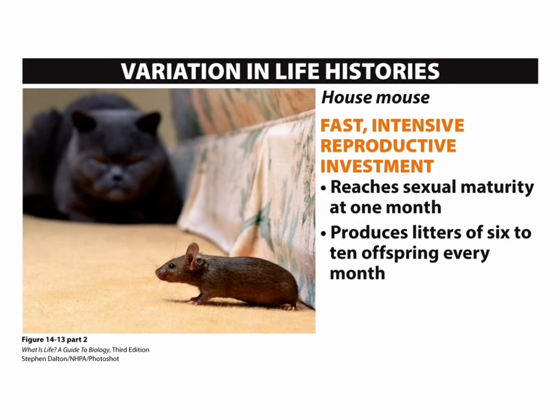The second life history strategy is fast, intensive reproductive investment. These animals reach sexual maturity at a fairly young age and then produce many litters over a short time frame. A good example of this is the house mouse. These animals reach sexual maturity at about one month of age and then reproduce frequently, producing litters of 6 to 10 offspring about every month. They don't live very long overall — they're putting some energy into maintenance of cells so that they live past one reproductive event, but they're putting a lot of energy into each reproductive event, which shortens their overall lifespan.